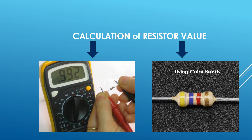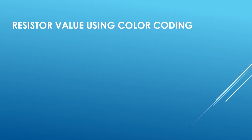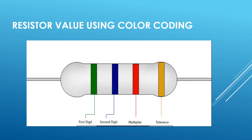This picture is for a four-band resistor. Whenever you are calculating the value of a resistor using color coding, you have to start from the side opposite to the tolerance band. The first band is the first digit, the second band is the second digit, the third band is the multiplier, and the last band is the tolerance band. There is a little more spacing between the third band and the tolerance band, so the tolerance band is your last band.